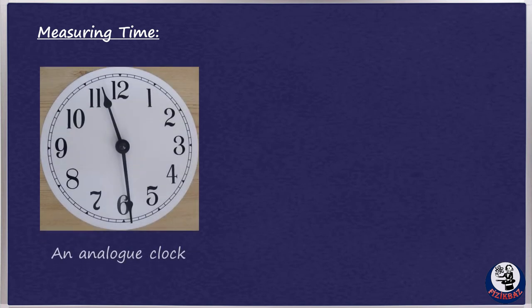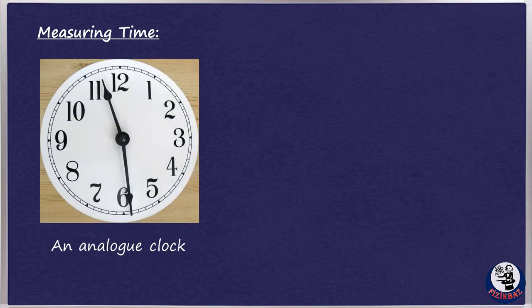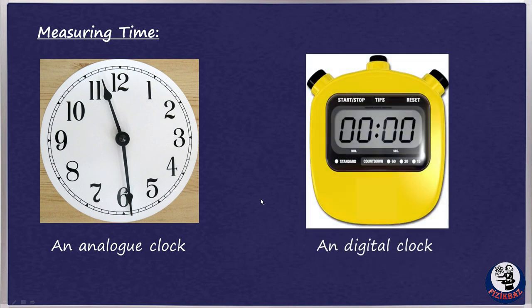For measurement of time, stop clocks and stopwatches can be used. You may come across two types of timing device. An analog clock is like a traditional clock whose hands round the clock's face. And digital clock is one that gives a direct reading of the time in numerals. For example, a digital stopwatch might show a time 12.32 seconds.